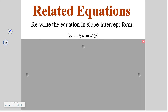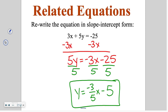Go ahead and try this one on your own. Subtracting 3x from both sides and then dividing everything by 5 gives y equals negative 3/5 x minus 5. If you have questions about this or anything else from the lesson, please let me know when you get to class.